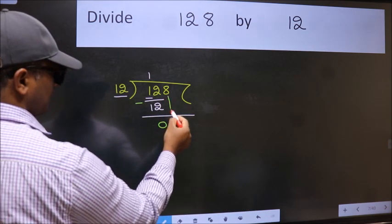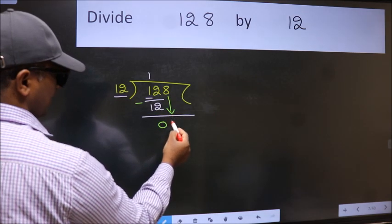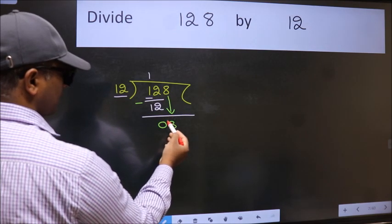We get 0. After this, bring down the beside number, 8 down. After this step,